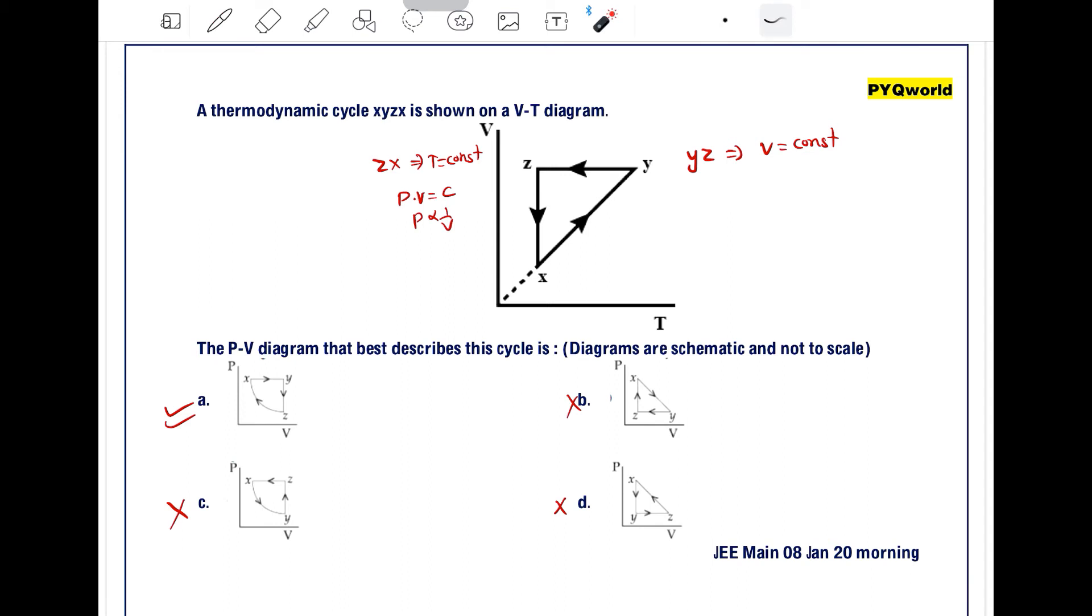We will discuss in detail. Now for z-x process, volume is decreasing. Here for z-x process, it is an isothermal compression because volume is decreasing. Arrow is given in this direction, so the volume is decreasing. Again, it is isothermal compression.